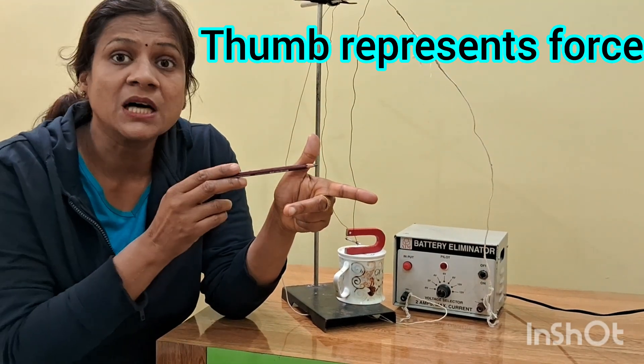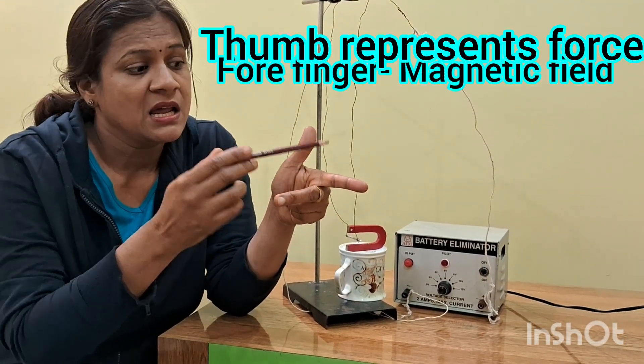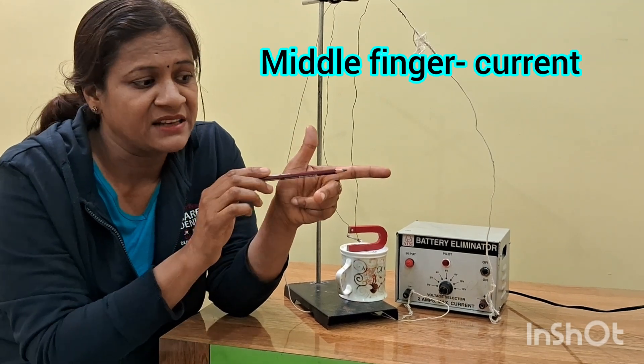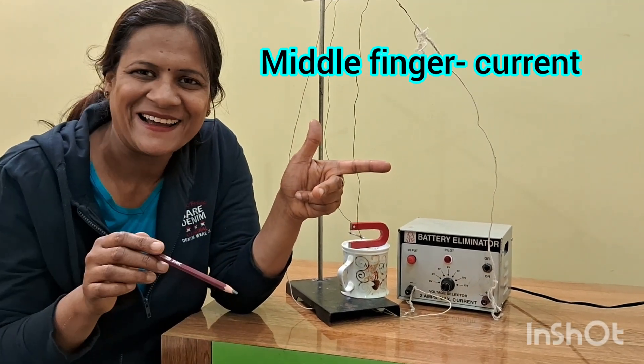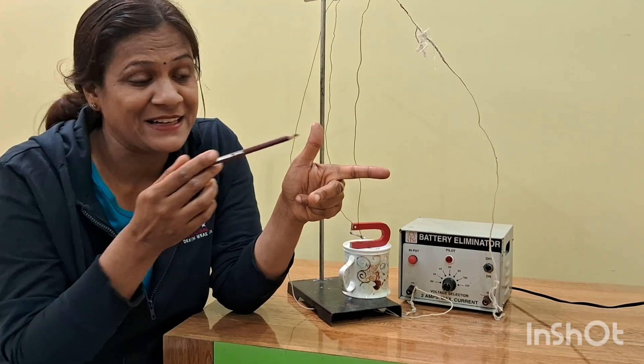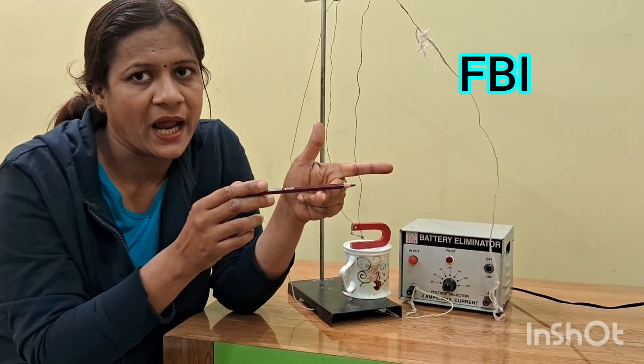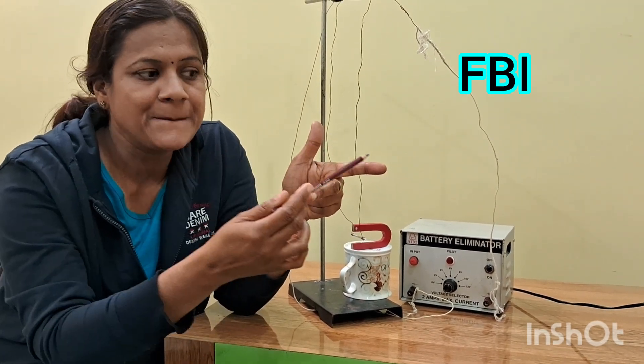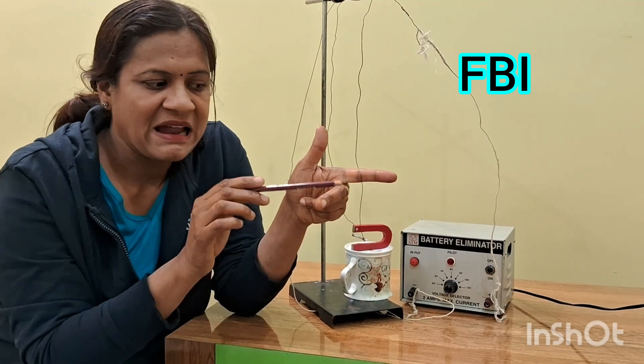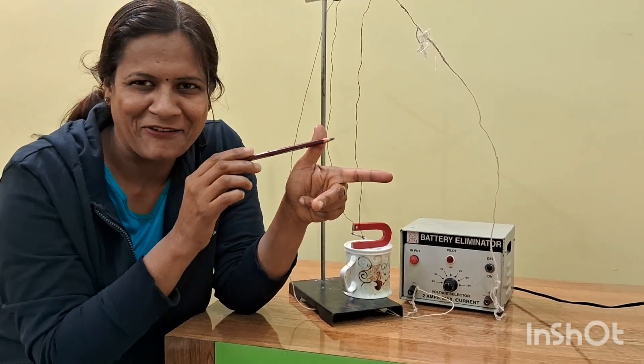In that case, thumb represents force, forefinger represents magnetic field, and middle finger represents current. To understand that, I have remembered it as FBI. F stands for force, B is the symbol of magnetic field, and I is current. So we are ready with our FBI.